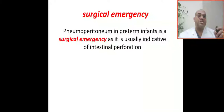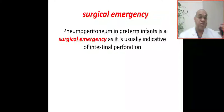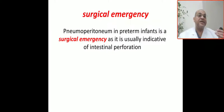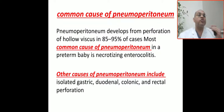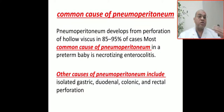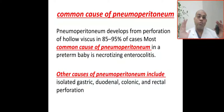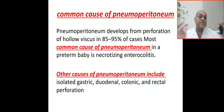This is a surgical emergency — pneumoperitoneum in a premature infant — and usually indicates intestinal perforation. A common cause of pneumoperitoneum is NEC in premature babies; approximately 82% of pneumoperitoneum develops from perforated viscus in 85 to 95% of cases. The most common cause in premature babies is necrotizing enterocolitis.